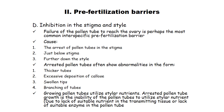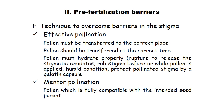Techniques to overcome barriers at the stigmatic surface: First, effective pollination — pollen must be transferred to the correct place and at the correct time (spatiotemporal requirement). Pollen must hydrate properly, i.e., rupture to release stigmatic exudates. Rub the stigma before or while pollen is applied. Maintain humid conditions and protect the pollinated stigma by a gelatin capsule.